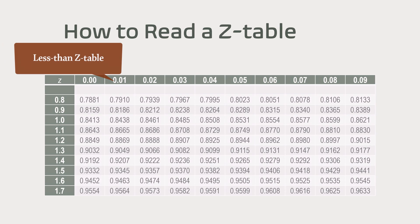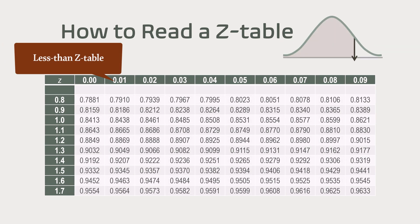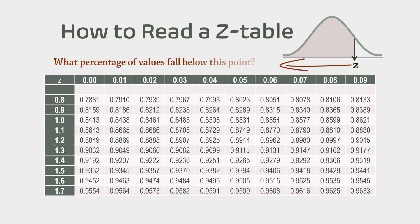The less-than-z table shows the area under the curve to the left of a given z-score. It answers the question, what percentage of values fall below this point?